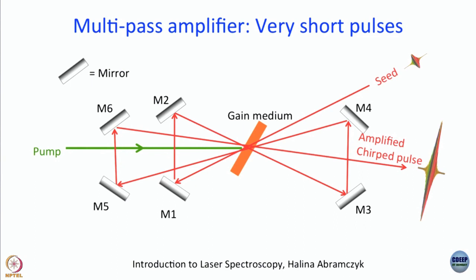The problem is that amplification is limited by how many mirrors you can put in. If you can put in 50 mirrors and make that many passes, amplification will be very large. But typically this is used when the pulse should not become too broad, and it is useful in applications where you need a really short pulse and can afford to compromise a little on energy.